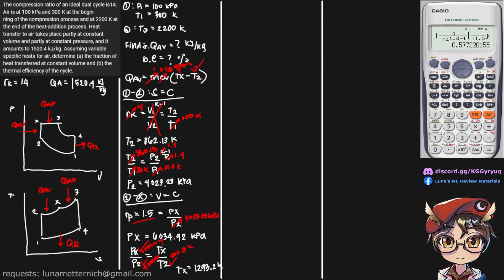Finally, we can find the heat addition at constant volume. Q_AV equals mass (assumed 1) times specific heat at constant volume times (Tx minus T2): 0.718 × (1293.2 − 862.13) = 309.15 kJ per kilogram. That is our final answer for question A.